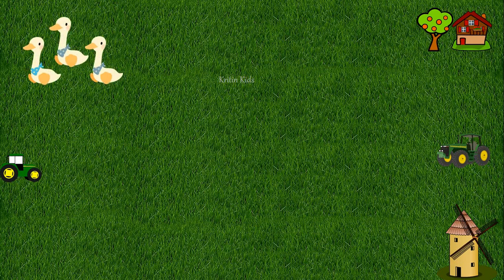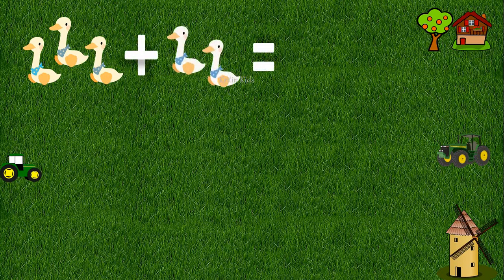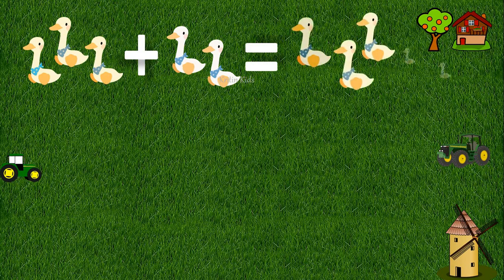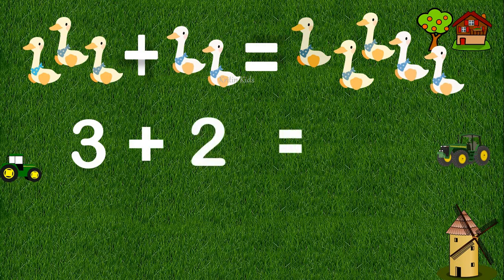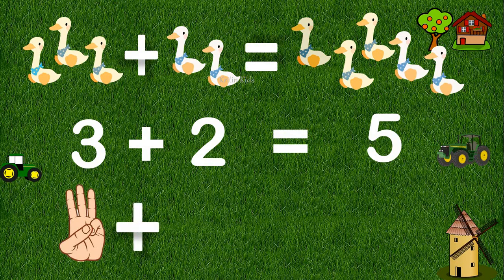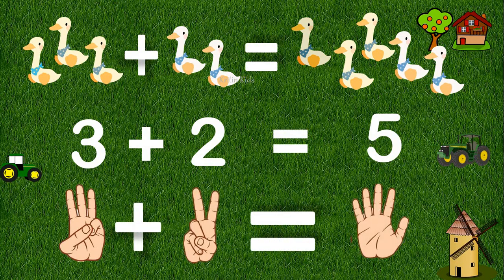We have three ducks in the farm. Now let's add two more ducks. Three ducks plus two ducks equals five ducks. That means three plus two equals five. Three fingers plus two fingers equals five fingers.